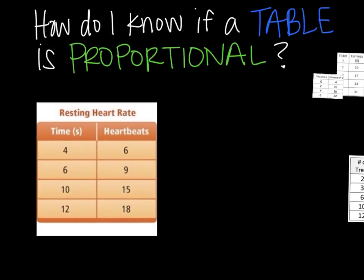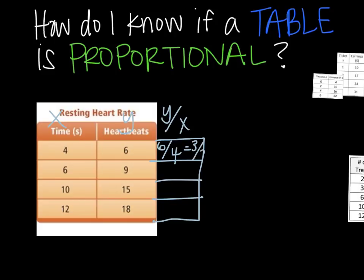Here's your first table. In order to find whether it is proportional or not, you have to extend out this table. And slope is y over x. So in order to find the slope from our graph, we're going to use y over x. So, x is your time, remember time is always x, and then y is heartbeats. So if I look at this first one, y over x would be 6 over 4. And that can simplify to 3 over 2.